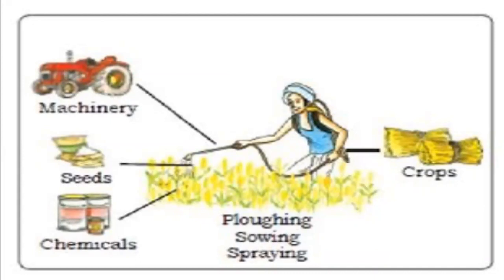Types of farming: we divide farming into two groups — subsistence and commercial. Subsistence is further divided into primitive and intensive, and primitive is further divided into shifting and nomadic herding. Commercial farming includes mixed farming, commercial grain farming, and plantation. I hope you liked my video — thank you very much.